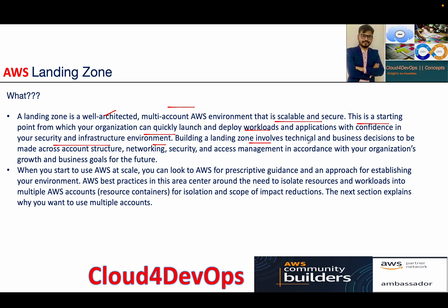Building a Landing Zone involves technical and business decisions across account structure, networking, security, and access management in accordance with your organization's growth and business goals. When you start AWS at scale, you look at perspective guidance from AWS for establishing your environment. The best practices center around the need to isolate resources and workloads.